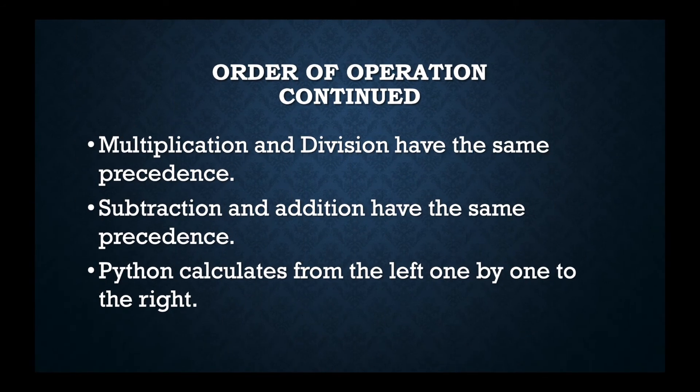Order of operation continued. Multiplication and division have the same precedence. Subtraction and addition have the same precedence. This means that multiplication and division comes before subtraction and addition. Python calculates from the left, one by one, to the right.